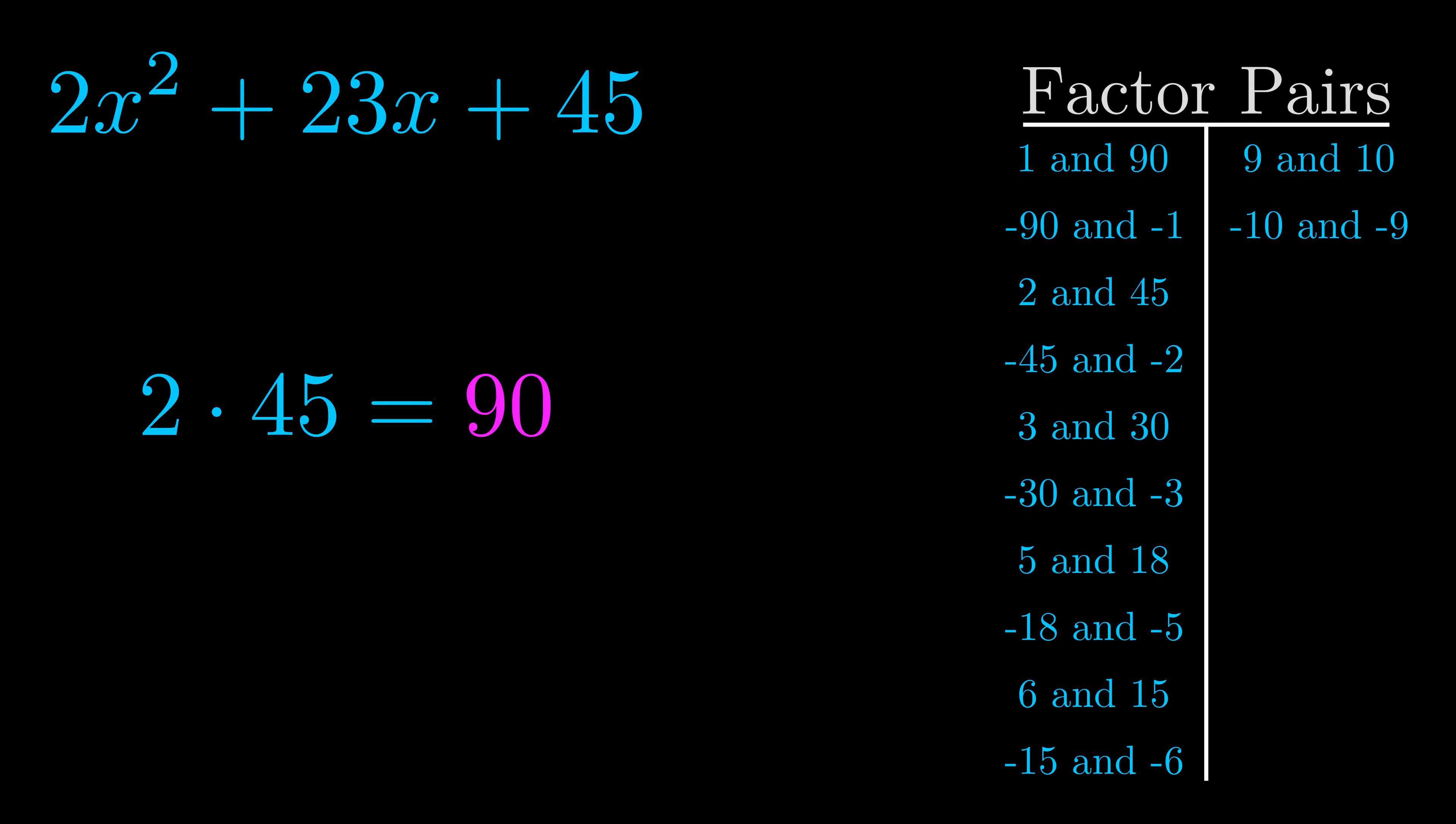The b value is the coefficient on the x term. That's the middle term, the one that we haven't done anything with yet. And really this is the only factor pair that we need.